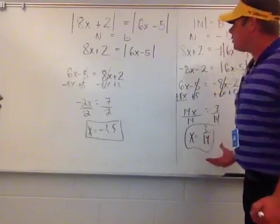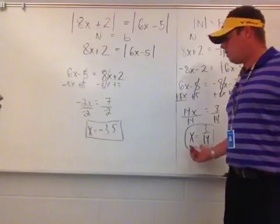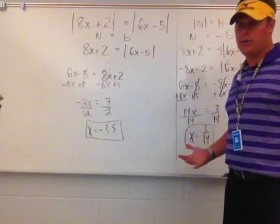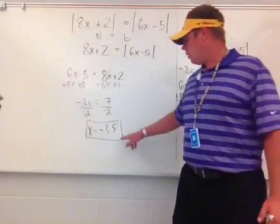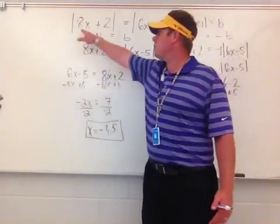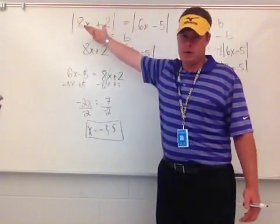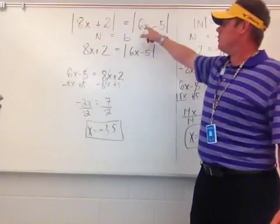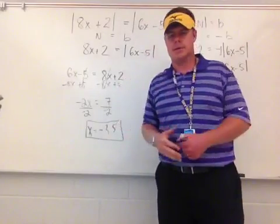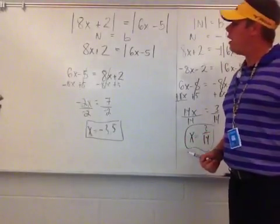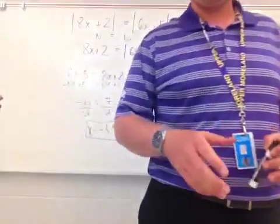It's also important that you always go back and check your answer to make sure it works out correctly. I've already checked them, and you'll find that they do work. But if you wanted to, you would plug negative 3.5 in: 8 times negative 3.5 plus 2, take the absolute value, and it should equal the absolute value of 6 times negative 3.5 minus 5. Do the same with x equals 3 fourteenths. That's how you solve an absolute value equivalent to an absolute value. I hope that helps with whatever you're trying to work on.